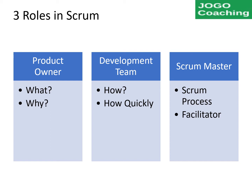Product Owner will own the requirement of the project. He or she knows the purpose of developing the project. Scrum Master is the master of the Scrum process. He or she will ensure that all the processes are followed by the team members. Development team will deliver the product as per the Product Owner's need.